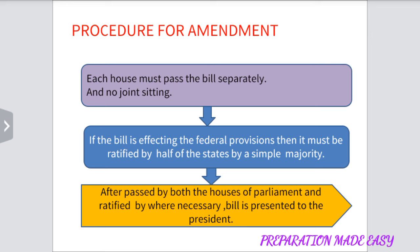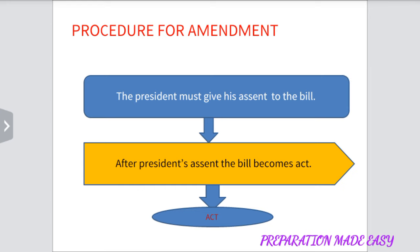Five, if the Bill is affecting the Federal provisions, then it must be ratified by half of the States by a simple majority. Six, after being passed by both the Houses of the Parliament and ratified by the States wherever necessary, the Bill is presented to the President. The President must give his assent to the Bill. After the President's assent is given, the Bill becomes the Act.